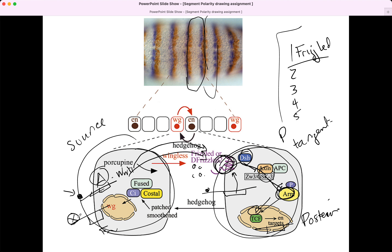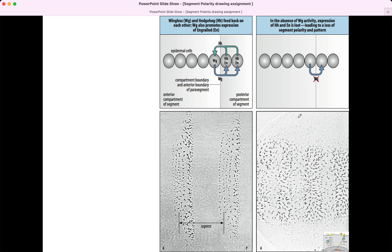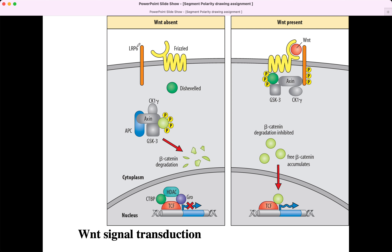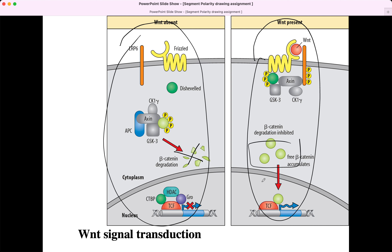A transcription factor must be expressed in the posterior cell but not the anterior cell — so that's going to be another posterior identity gene. The anterior cell has the Frizzled gene, but of course it does not have the appropriate transcription factor, so it doesn't express Frizzled and doesn't receive the Wnt signal — so it's not a posterior cell. When Wnt is absent, beta-catenin gets degraded. When Wnt is present, it stabilizes beta-catenin. That's the canonical Wnt signaling pathway found in every animal.